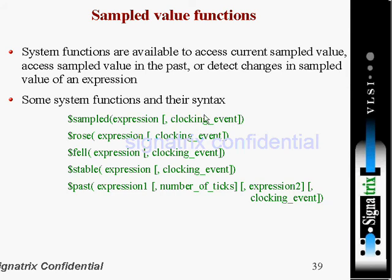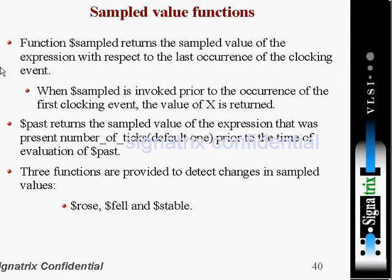At the particular clock event, what is the value — that is what is explained here. It returns the sampled value of the expression with respect to the last occurrence of the clocking event. Suppose if you are calling this $sampled function before the occurrence of the first clock event, it will show x — that is the unknown value.